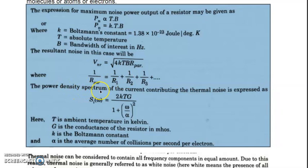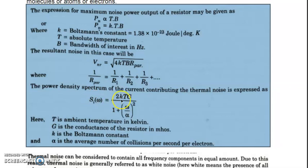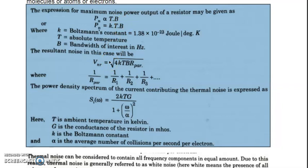The power density spectrum S(jω) is given in the frequency domain as: S(jω) equals 2KTG divided by [1 plus (ω/α)²], where T is ambient temperature in Kelvin, G is the conductance of the resistor in mho, K is Boltzmann's constant, and α is the average number of collisions per second per electron. For diploma students, remember the formula for maximum noise power output and the resultant noise in an electrical network.